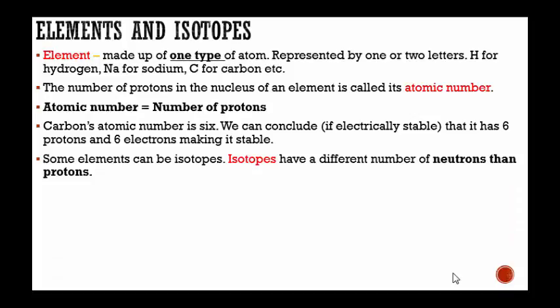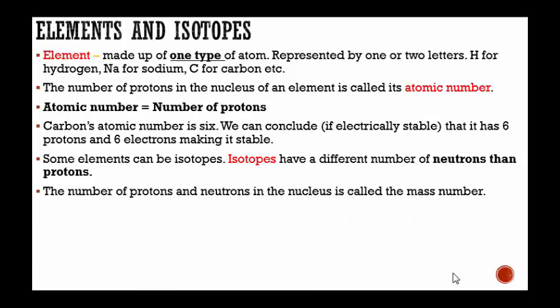Some elements can be isotopes. Isotopes have a different number of neutrons than protons. The number of protons and neutrons in the nucleus is called the mass number. We have the atomic number, which is the number of protons, and we have the mass number, which is the number of protons and neutrons. The mass number is also known as the atomic mass.